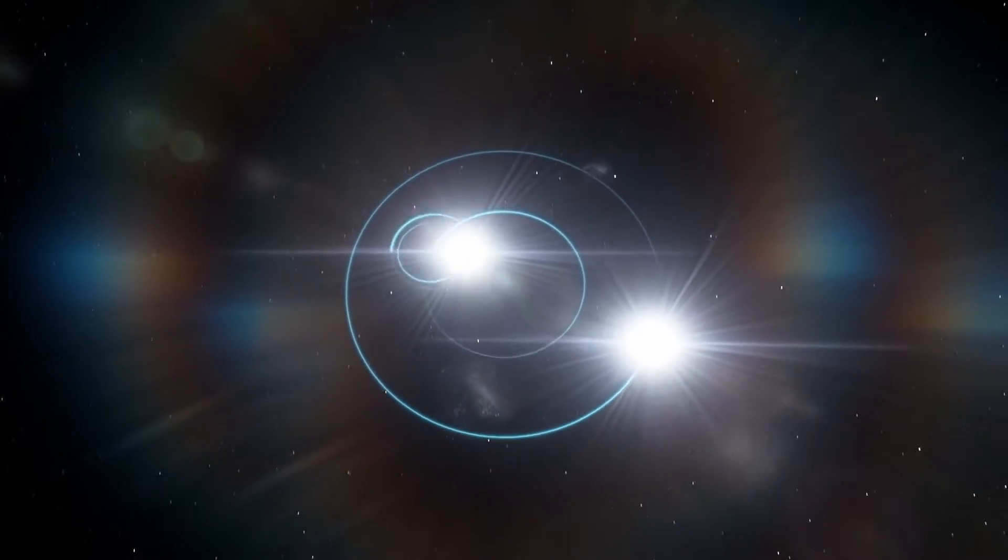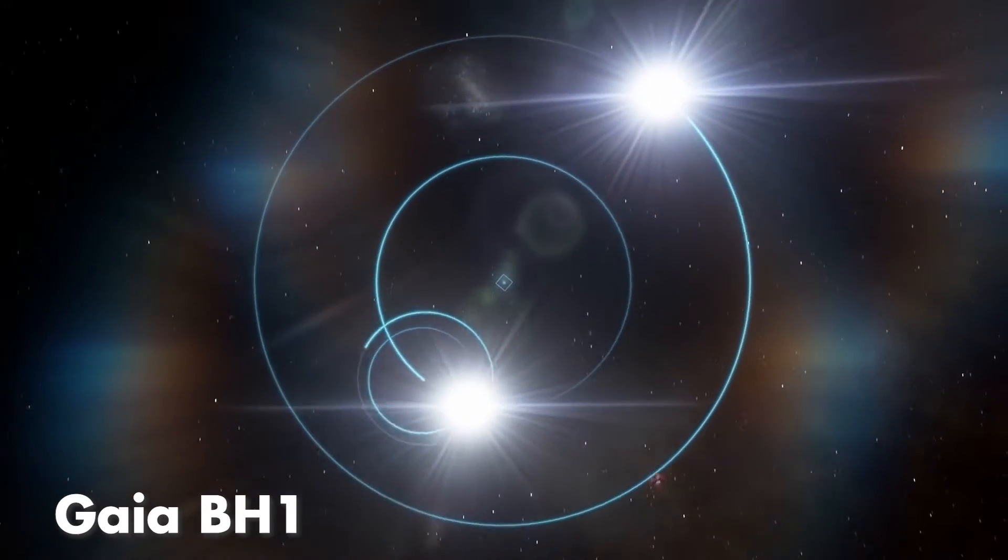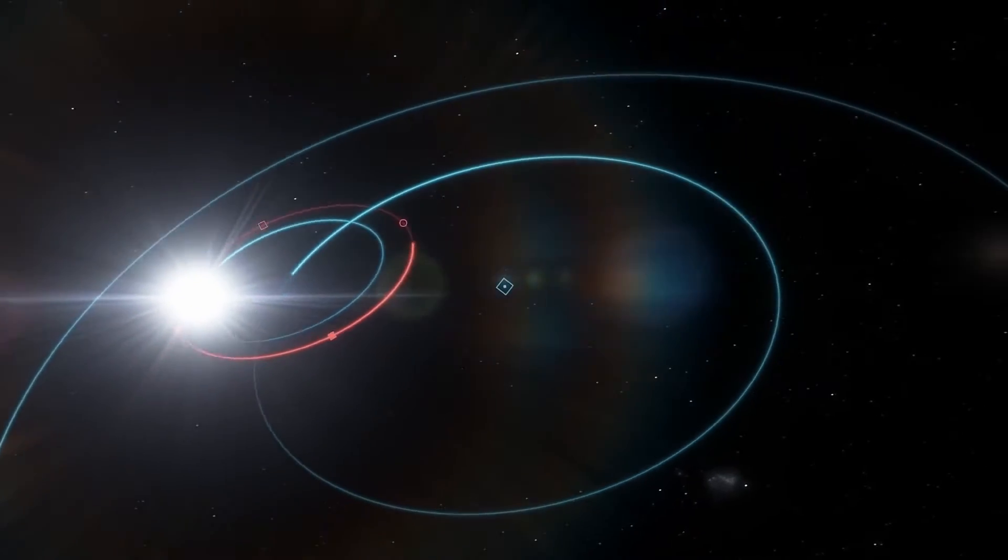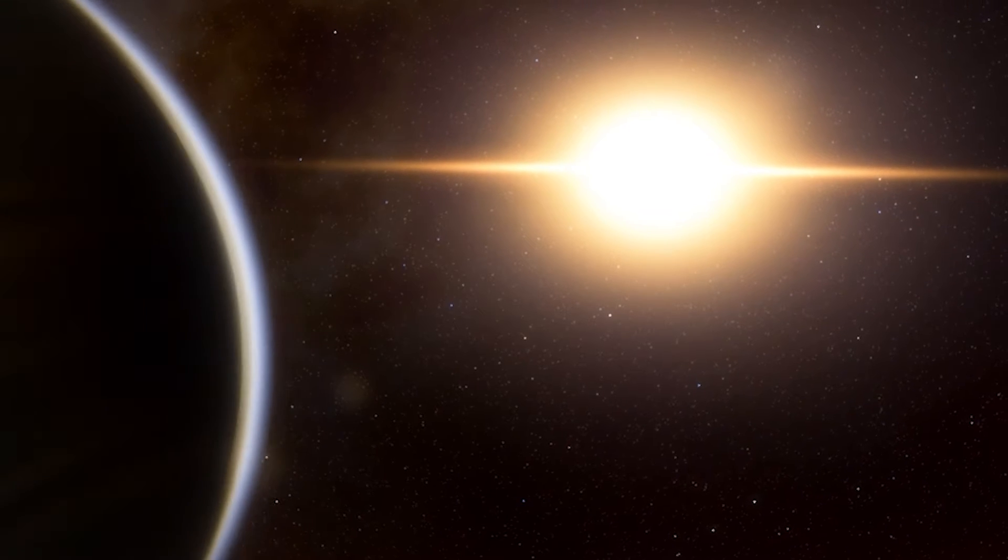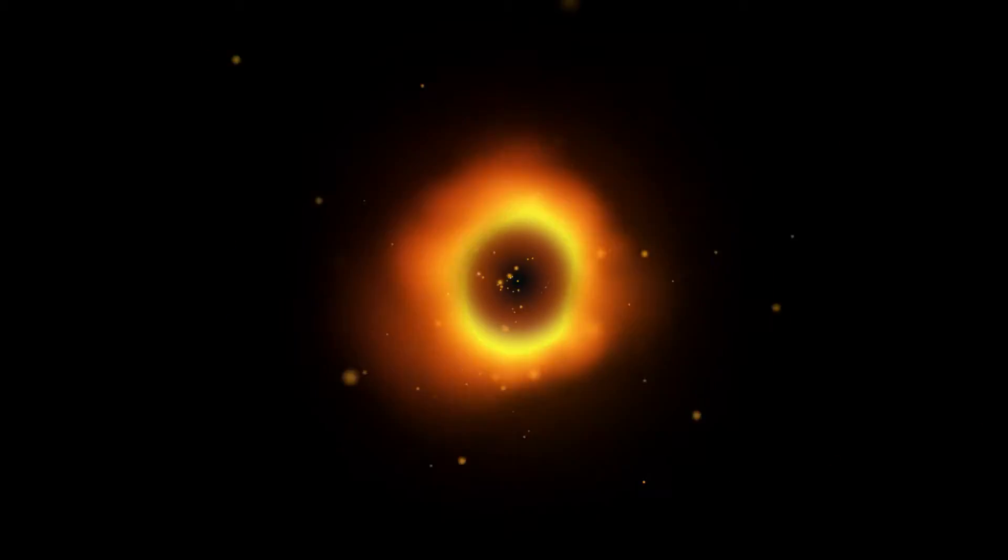The newly found object, Gaia BH1, a stellar-mass black hole, is part of a binary system that also includes a sun-like star. That star is about as far away from its companion black hole as Earth is from the Sun, making Gaia BH1 truly unique.